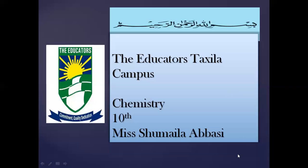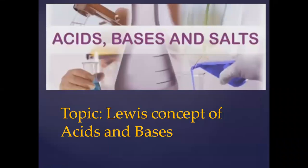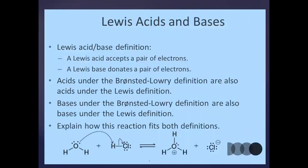Assalamu alaikum dear students, welcome to online class of chemistry. Today we will continue our chapter acid bases and salt. Our topic is Lewis concept of acids and bases. In 1923, G.N. Lewis proposed an acid base theory that focuses on reaction. This concept is more general than either the Arrhenius theory or Bronsted-Lowry theory.